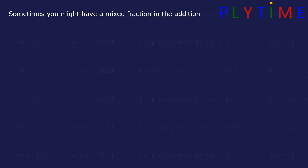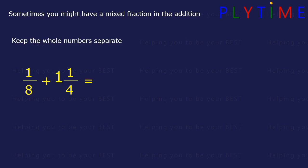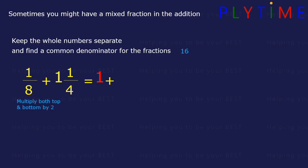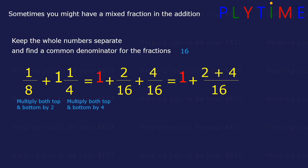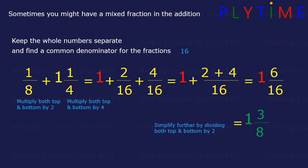Sometimes you might have a mixed fraction in the addition. For 1 eighth plus 1 and 1 quarter, keep the whole numbers separate, so we have 1. Then we need to find a common denominator for the fractions — 4 and 8. The common denominator is 16. To convert an eighth to 16ths, we multiply the top and bottom by 2, giving 2 sixteenths. And to convert quarters to 16ths, we multiply the top and the bottom by 4, giving 4 sixteenths. So we have 1 plus 2 plus 4 over 16. 2 plus 4 is 6, so we have 1 plus 6 over 16. We can simplify by dividing the top and the bottom by 2, and we end up with 1 and 3 over 8.